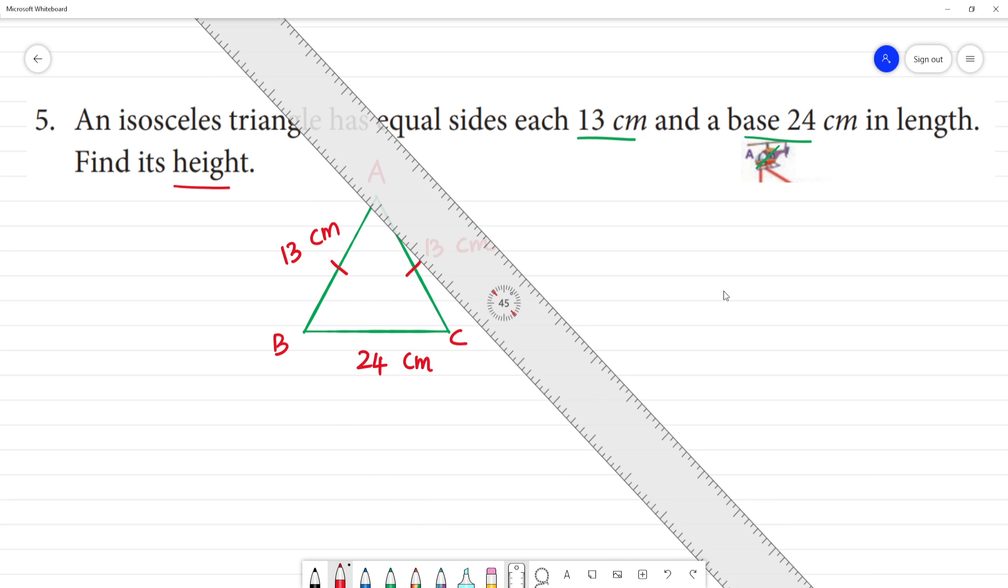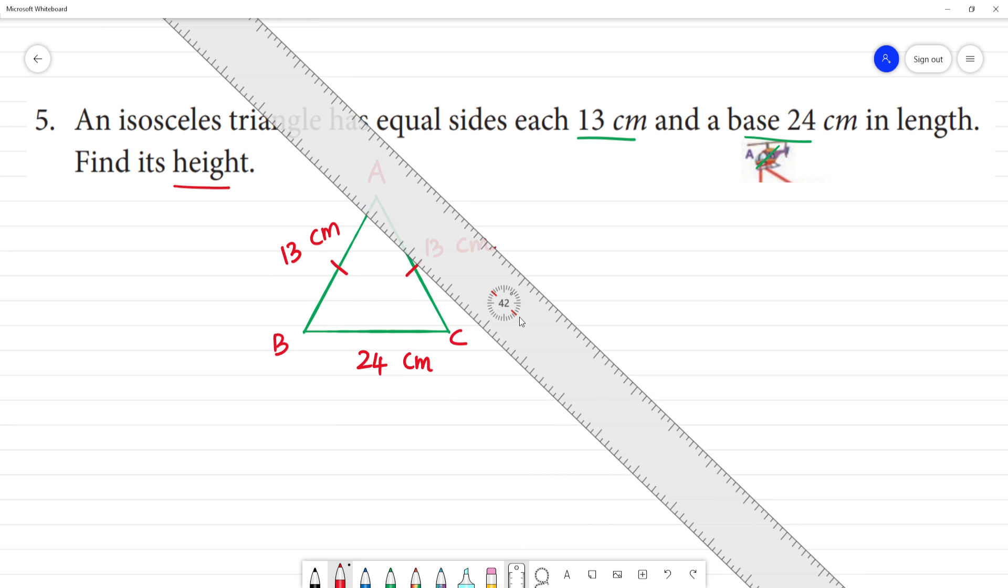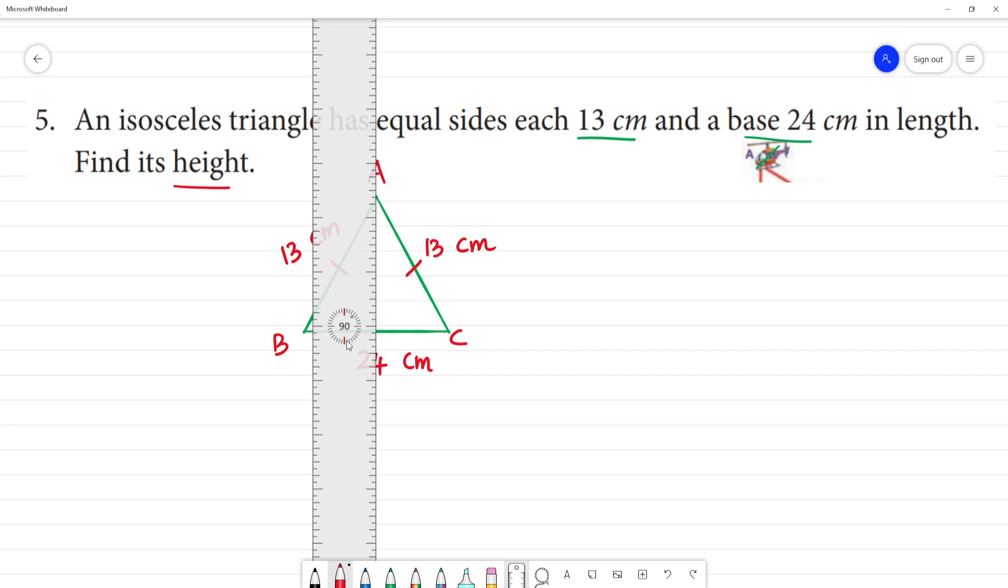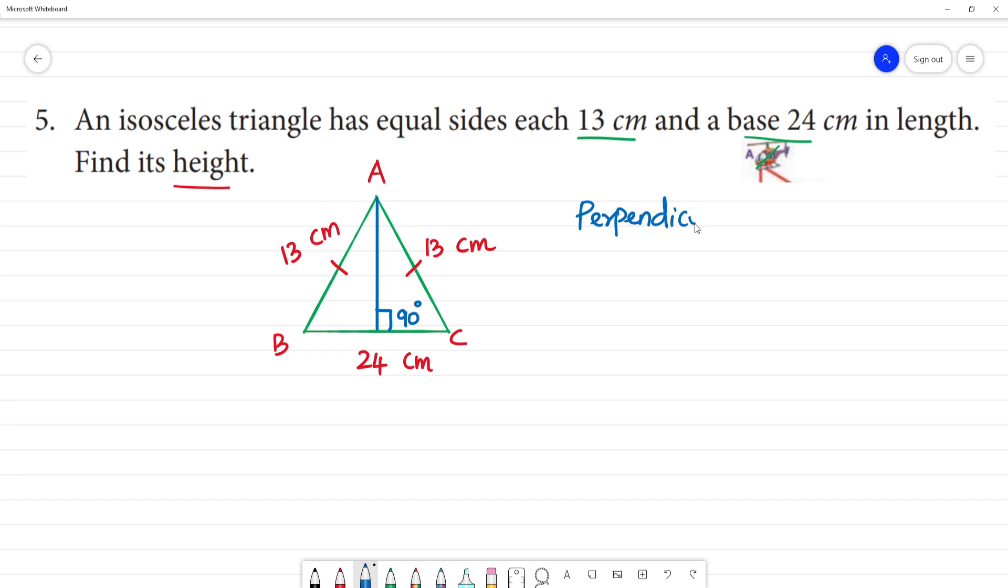To find the height, we can draw a perpendicular bisector. This is perpendicular bisector. What is perpendicular bisector? This will be 90 degrees, so perpendicular to the base.